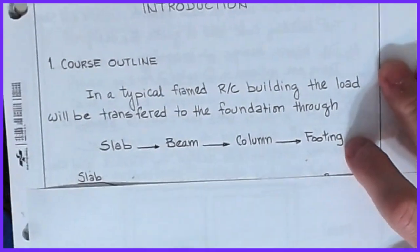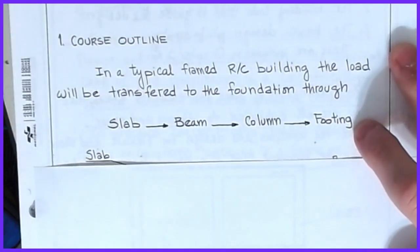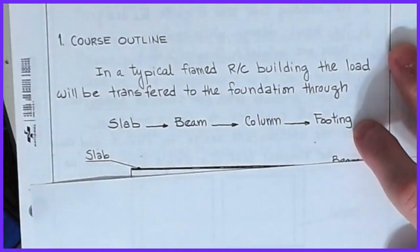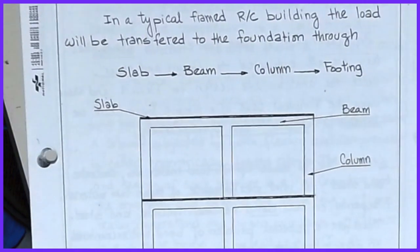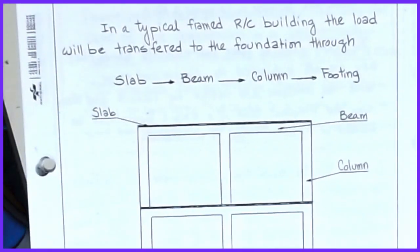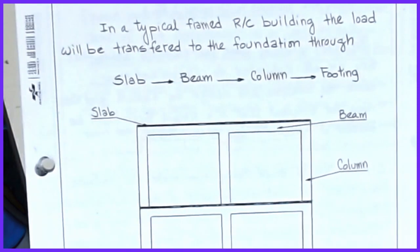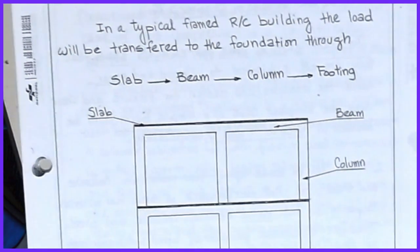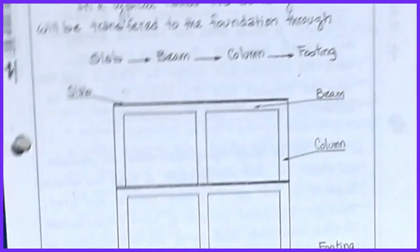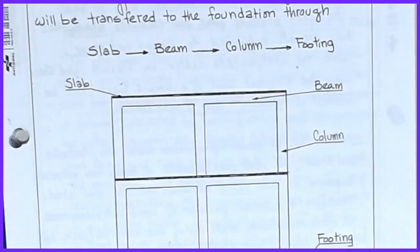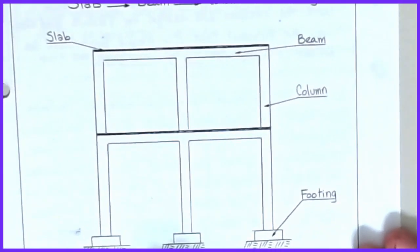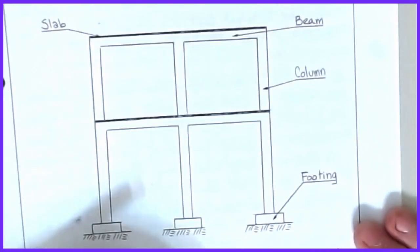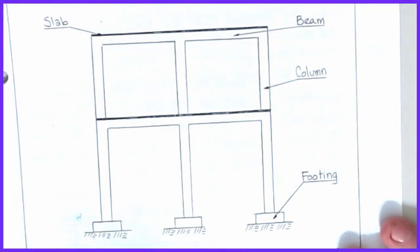The basics we're going to start with is talking about some of the terminology and terms that will be used repeatedly in this class. We started our discussion with a basic simple structure — a typical reinforced concrete frame. You may have a structure that looks something like this: a multiple portal, multiple story type of building.